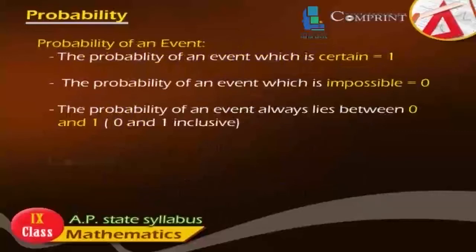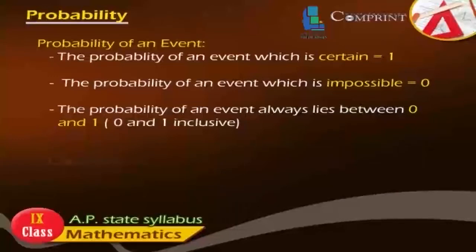Probability of an event: The probability of an event which is certain is equal to 1. The probability of an event which is impossible is equal to 0. The probability of an event always lies between 0 and 1, inclusive.